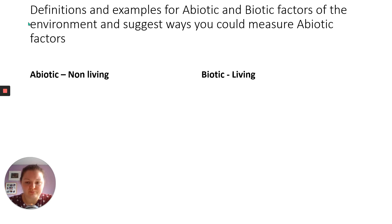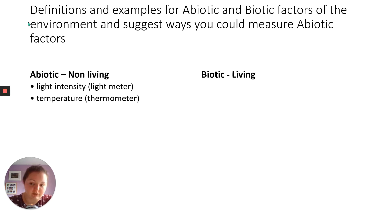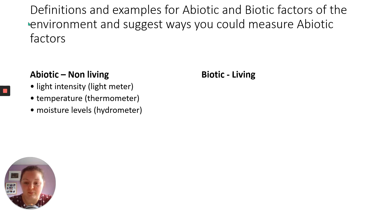Ecology revision. The first thing is the definition for abiotic and biotic factors — what they are and how you could measure them. Abiotic factors are the non-living parts of an environment, of an ecosystem. That's things like light intensity, which you can measure with a light meter; temperature with a thermometer; moisture levels with a hydrometer. You can get the general gist that a lot of these just have the word 'meter' stuck on the end of them.